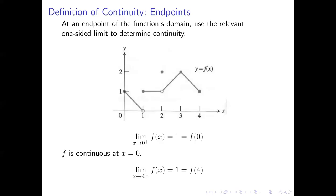The same thing goes for our right-hand endpoint where x equals 4. Here we'll look at the limit as x approaches 4 from the left, because our function's not defined to the right of 4. That limit is equal to 1, which is also the value of f of 4, so our function is continuous where x equals 4. For these endpoint cases, we look at one-sided limits; for anything in between, we look at the ordinary limit.